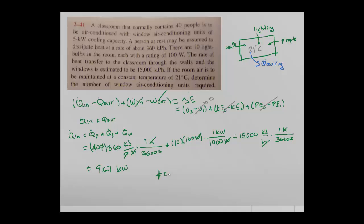The number of units will be Q_in divided by the cooling capacity that each unit has. That is 9.67 kW divided by 5 kW per unit, which gives us more than 1.2. We cannot buy fractional units, so we will need 2 units.